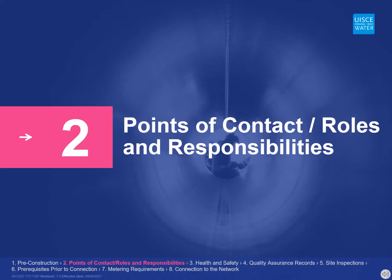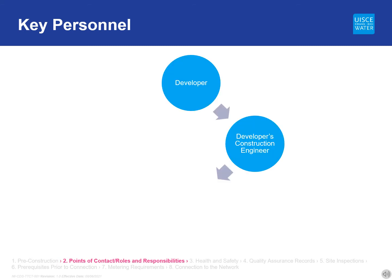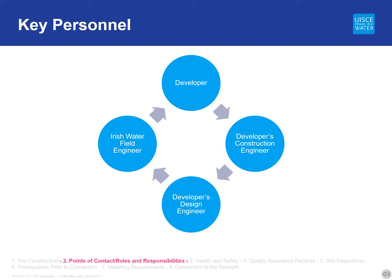During the construction phase, there are a number of key personnel who have a role in ensuring the successful delivery of the water services infrastructure within the development. Each of these personnel has specific roles and responsibilities. The key personnel are the developer, the developer's construction engineer, the developer's design engineer, and the Irish Water field engineer. When submitting the commencement notice and before work starts on site, the developer must appoint a design engineer and a construction engineer. Irish Water strongly recommends that they are fully aware of their roles and responsibilities in the quality assurance process and that they attend the pre-construction meeting.